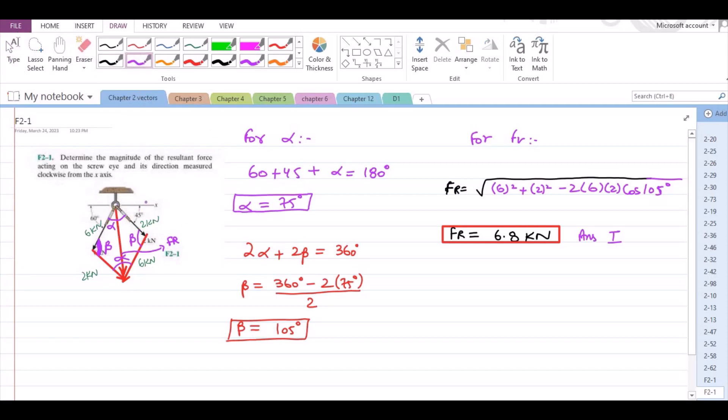Now, we have to find the direction of the resulting force measured clockwise from the positive x-axis. Which means we have to find this angle clockwise. Let's call this angle phi.